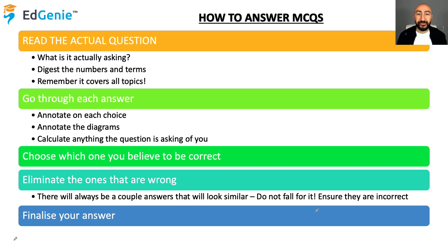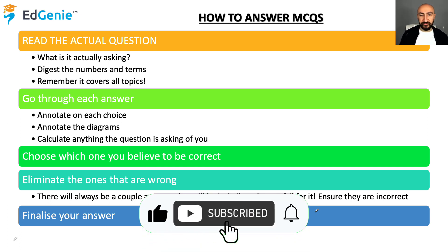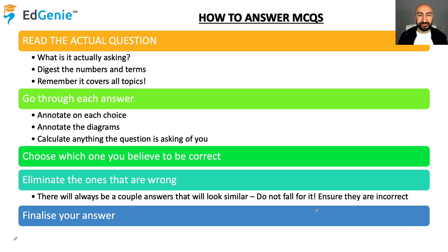How do we answer multiple choice questions? What most students do is just look at the question and look through the answers to see where the answer is — tick — without giving it much thought, because they think they're in a rush or they've got lots of questions to do, because they don't value those multiple choice questions.